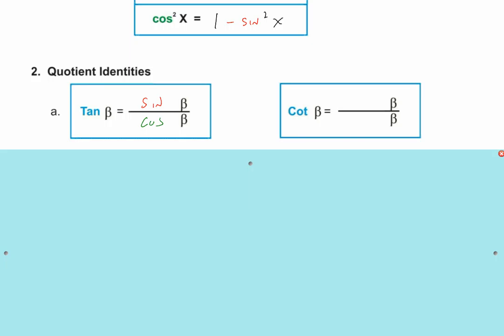This should be memorized about 24% of the time — the tangent equals sine over cosine. And if you know the tangent is sine over cosine, then the cotangent must be the cosine over the sine, because it's the reciprocal relationship.